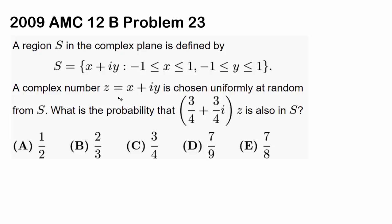This is 2009 AMC 12B problem number 23. Region S is defined as the set of all complex numbers x plus iy such that x is between negative 1 and 1, and y is between negative 1 and 1. So basically the real part x is between negative 1 and 1, and the imaginary part y also varies between negative 1 and 1.